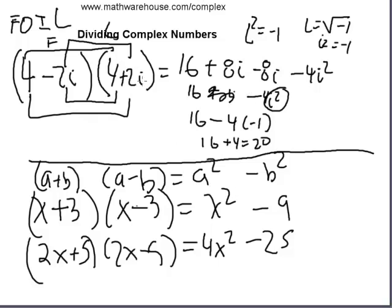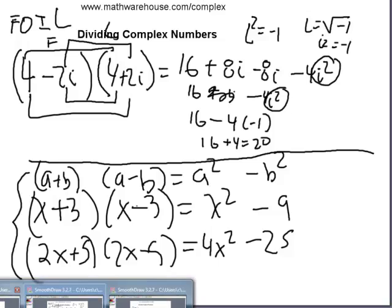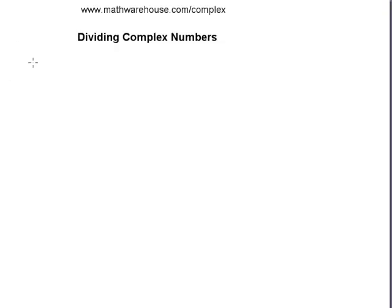There's a special word for 4 minus 2i and 4 plus 2i — they are called conjugates. Just like in Algebra 1 when you multiplied (a+b)(a-b), the same thing occurs with complex numbers. Multiplying 4 minus 2i times 4 plus 2i eliminates all imaginary numbers, because the i squared term becomes negative 1.